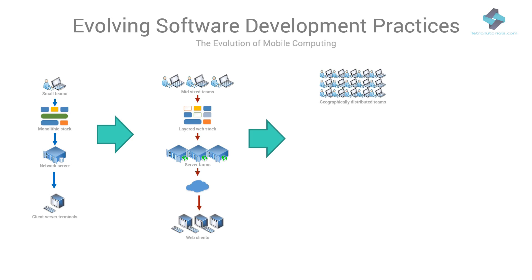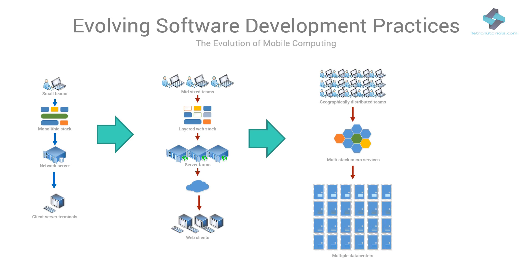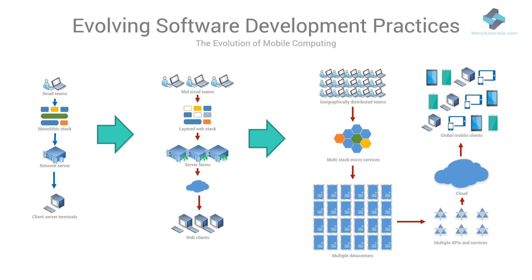Now comes the current era of ubiquitous connectivity and ever-increasing adoption of mobile computing. To cater to these demands, modern mobile apps and web applications are reaching global scale with billions of users. These applications are built by larger, geographically distributed teams who stitch together collections of services, APIs, or microservices using a variety of stacks that are independent of each other. The services run on clusters spanning thousands or tens of thousands of servers, and consumers access them over the cloud and public internet using mobile, tablet, and desktop devices.